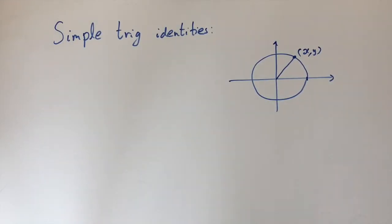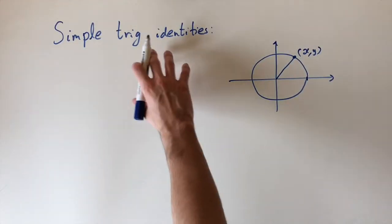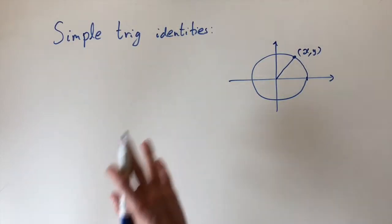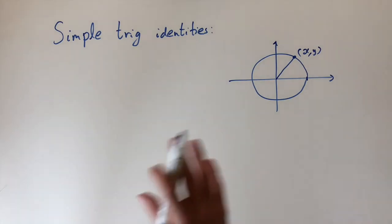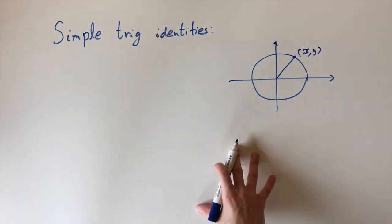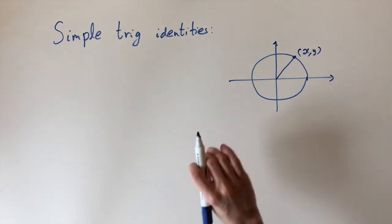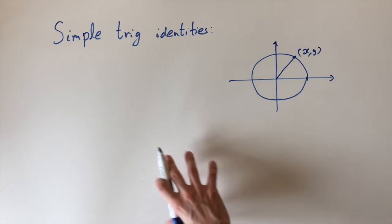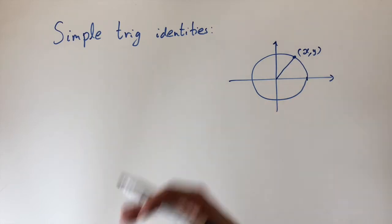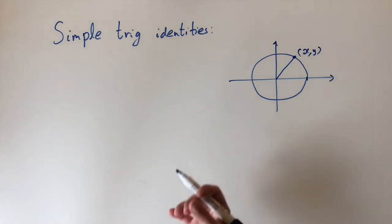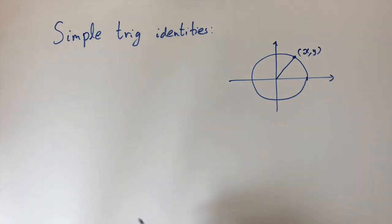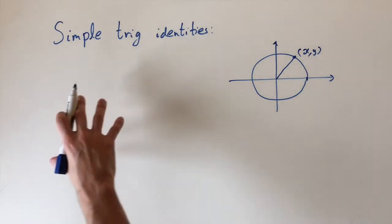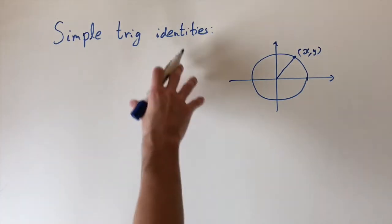Today we're going to be looking at two simple trigonometric identities. We're going to see why they're true with a quick derivation, and then look at some examples of using them to simplify expressions.